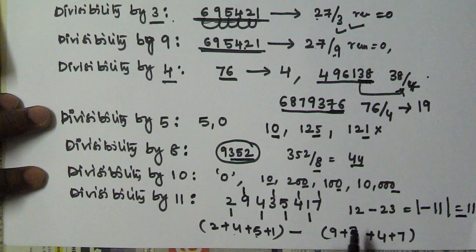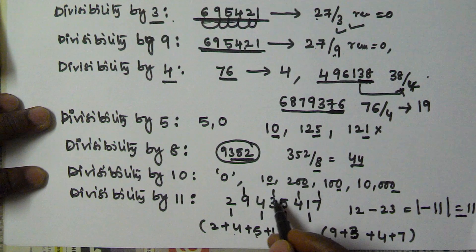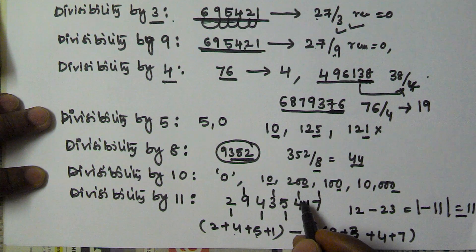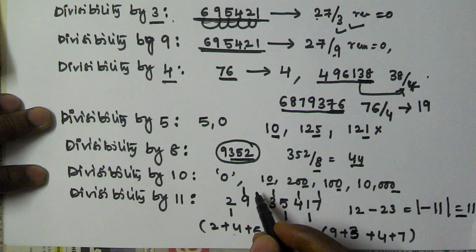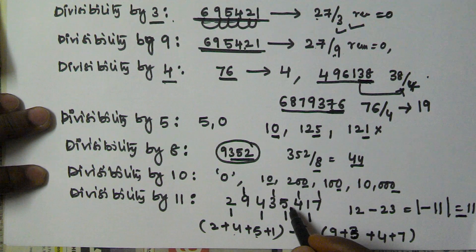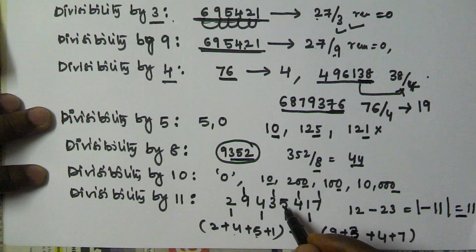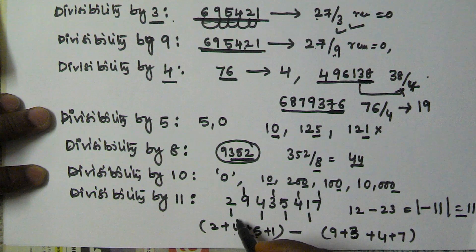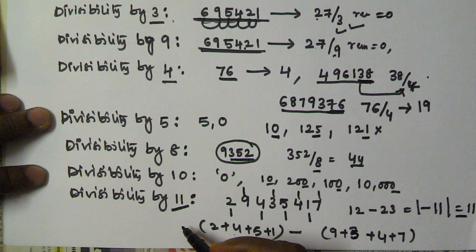So the divisibility rule for 11 is: take the sum of digits in odd places and the sum of digits in even places, then find their difference. If the difference is 0 or a multiple of 11, then that number is divisible by 11. Thank you very much for watching this video. I hope you understood all these concepts. If you have any doubt, please leave a comment and please subscribe to my channel.